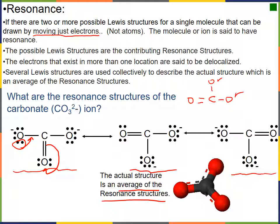Each of these possible structures is called a contributing resonant structure. The electrons do not exist localized on any one bond — they are delocalized. The structure that actually exists is a mathematical average of the three resonant structures. For carbonate, this gives us one and one-third bonds between each carbon and oxygen, because that double bond is shared equally across three different positions.